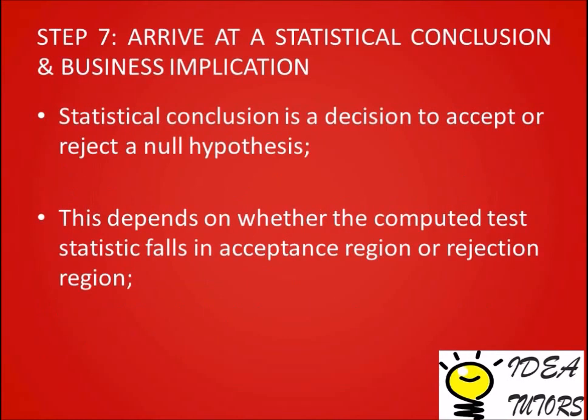Step 7: Arrive at a statistical conclusion and business implication. A statistical conclusion is a decision to accept or reject the null hypothesis. This depends on whether the computed test statistic falls in the acceptance region or the rejection region.